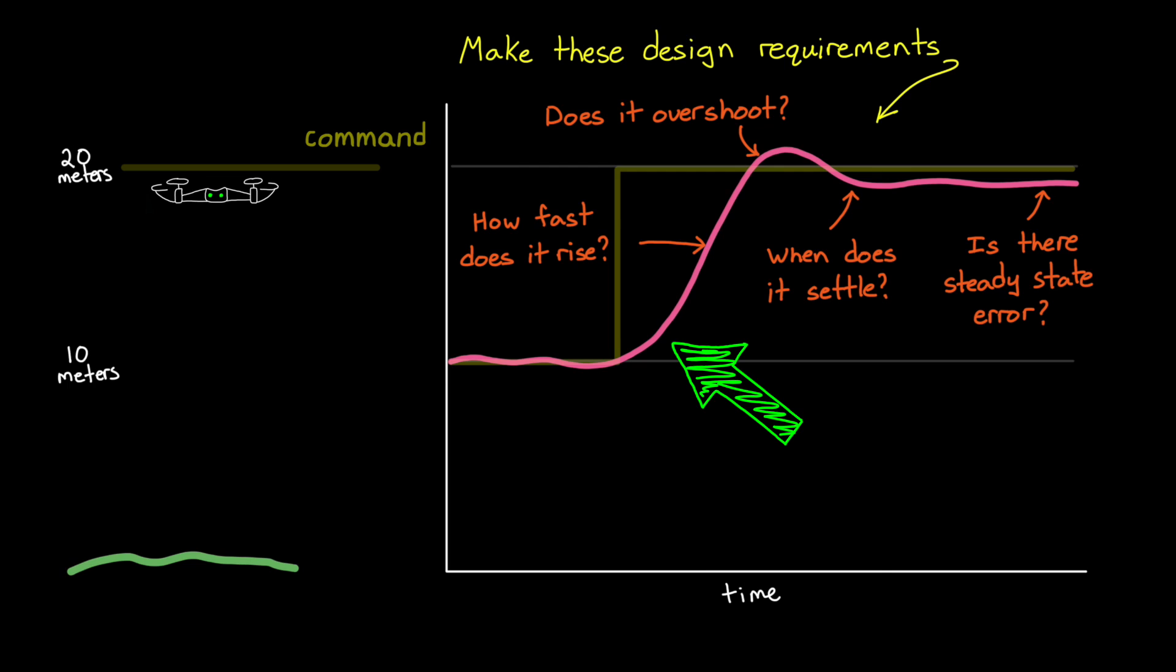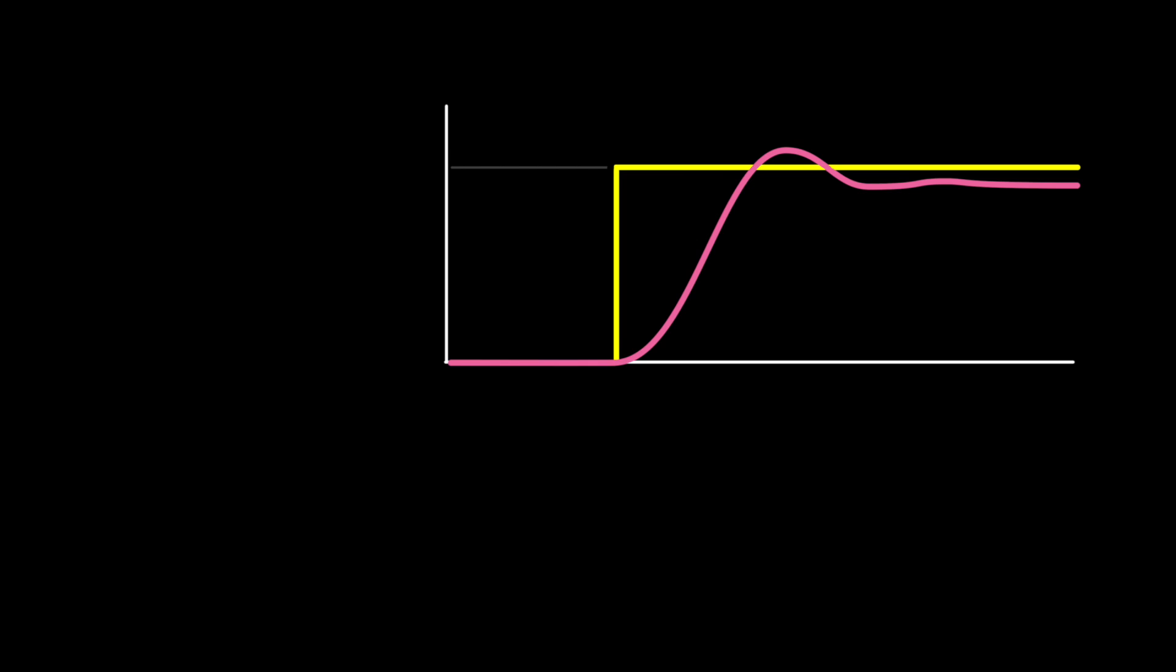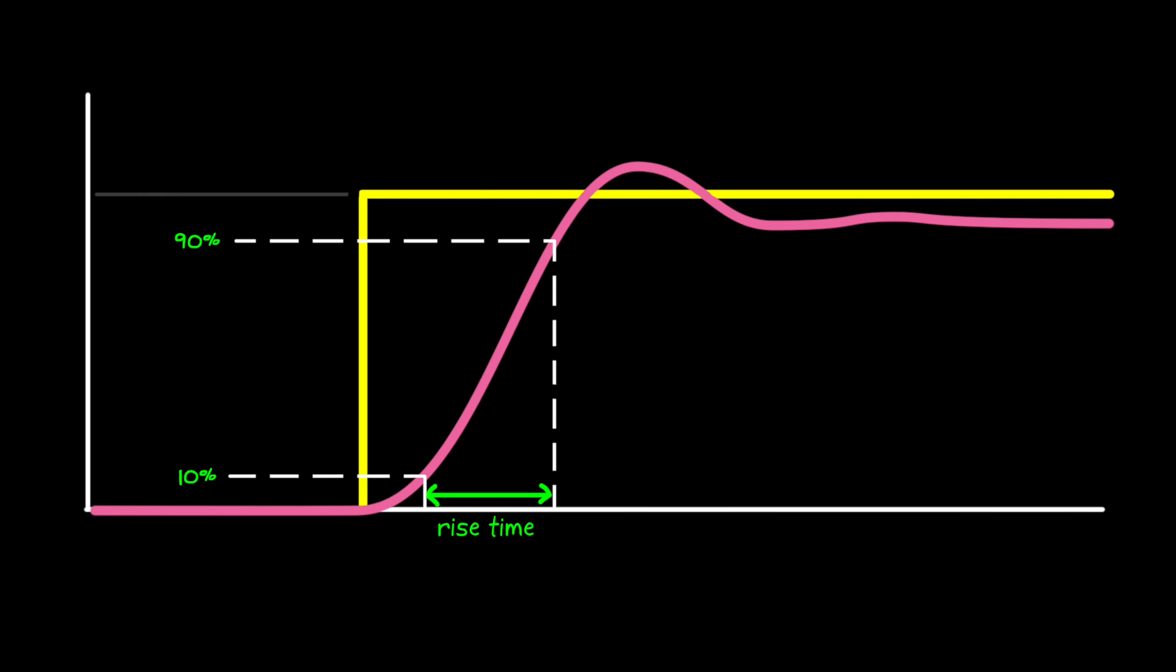Of course, usually we don't just draw a picture of a step response and say, make it look like this. We define it by building up the step response as a set of individual features. Let me show you what I mean. We can define the response in terms of rise time, which is the time required for the signal to rise from some starting point to an ending point. Usually it's measured from 10% to 90% of the final value. Then overshoot, which is the maximum percentage over the final value that it reaches. And if the maximum value is the final value, then there is no overshoot. There's settling time, which is the time it takes for the response to enter and stay within some percentage of the final value. And there's steady state error, which is how far off the final value is from the commanded value when it's at steady state.